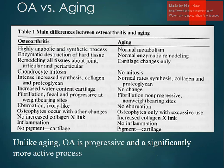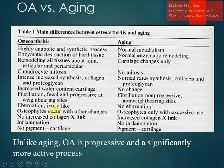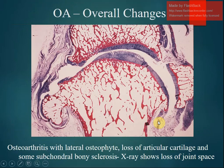The main differences between osteoarthritis and aging: in normal aging there is normal metabolism, normal enzymatic remodeling, cartilage changes only with no mitosis, normal synthesis rates of collagen and proteoglycan, no eburnation, and osteophytes only with excessive use. In OA, there is enzymatic destruction and remodeling, chondrocyte mitosis, increased synthesis of collagen and proteoglycan, increased water content, cartilage fibrillation, eburnation with ivory-like shiny surfaces, subchondral bone spurs, and no pigmentation — whereas in aging there is pigmentation.